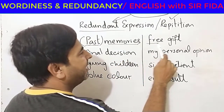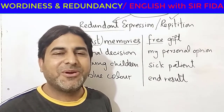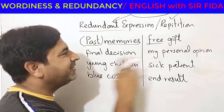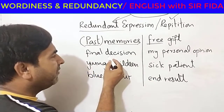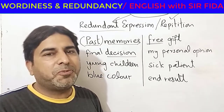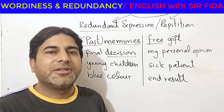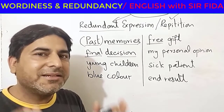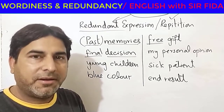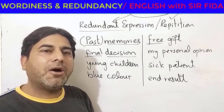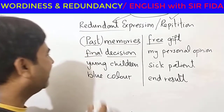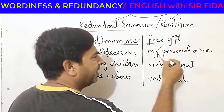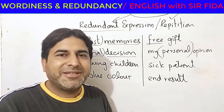'Past memories' — redundant. 'Free gift' — since no gift is given on payment, the word 'free' is futile and not needed. 'Final decision' — when we reach a decision after long discussion, it is definitely final, so the word 'final' is redundant. Remember: a redundant word is an extra or spare word in the sentence. You can take it out or leave it in and it makes no difference.